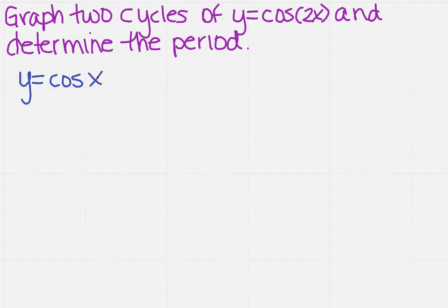If I have the cosine of x, I know that my cycle is 0 less than or equal to x is less than or equal to 2π.